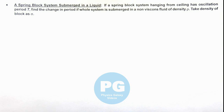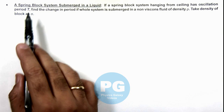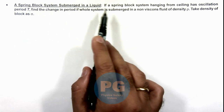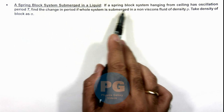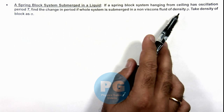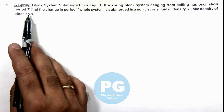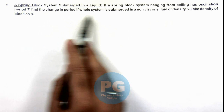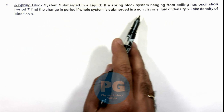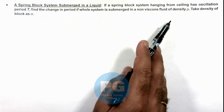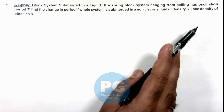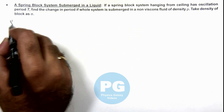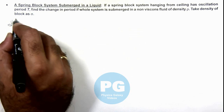In this illustration we'll study a spring-block system submerged in a liquid. We are given that a spring-block system hanging from a ceiling has oscillation period T. We are required to find the change in its period if the whole system is submerged in a non-viscous fluid of density ρ. The density of the block is taken as σ.